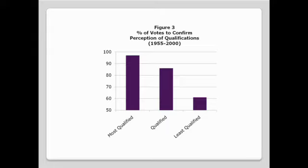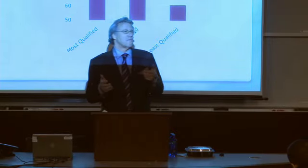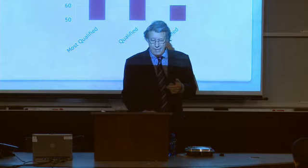According to studies done by political scientists, in the period 1950 to 2000, eight nominees were perceived as most qualified — including Scalia, Brennan, and Ginsburg — and those eight nominees were confirmed by an average of 95% of the vote. By contrast, the six nominees who were perceived as least qualified — including White, Carswell, and Thomas — received only 61% of the vote. Those perceived as having average qualifications, such as Berger, Breyer, and Souter, received on average 86% of the vote. So it's fair to say that the perceived excellence or lack thereof matters to members of the Senate, and that's a good thing.